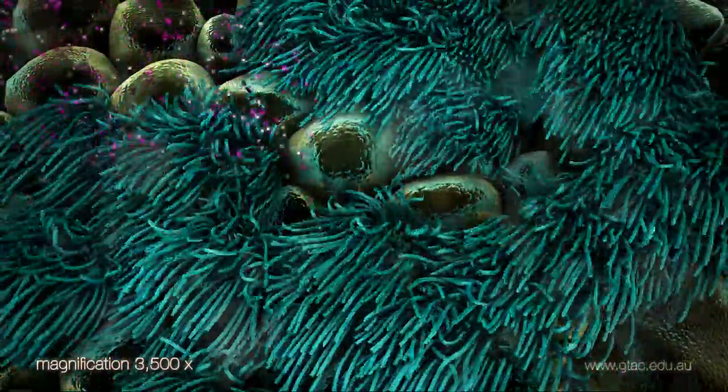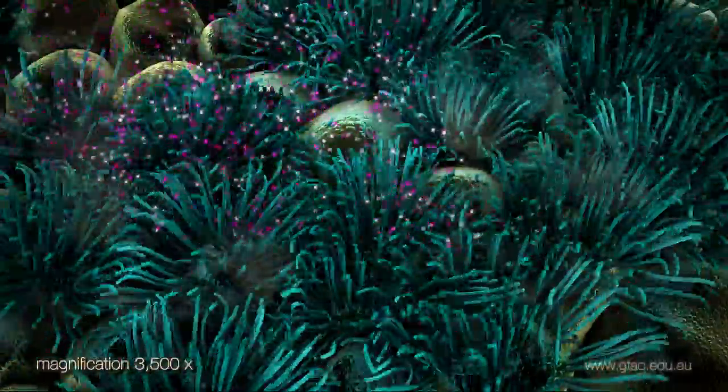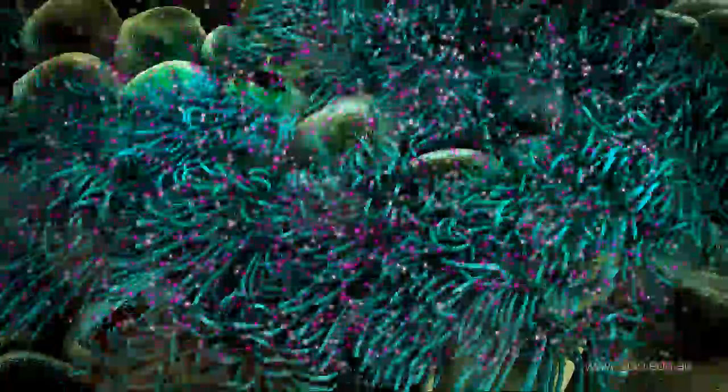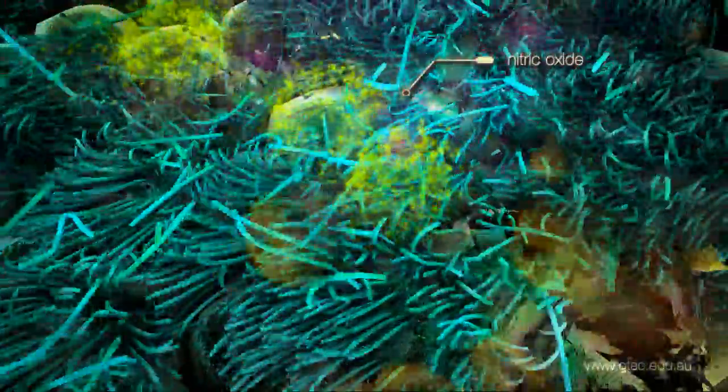The toxins spread through the airways, causing the goblet cells and ciliated cells to rupture and die. The bacterial toxins also stimulate the goblet cells to release nitric oxide.